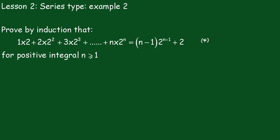We have to prove by induction that 1 times 2 plus 2 times 2 squared plus 3 times 2 cubed, all the way up to n times 2 to the n, is equal to (n minus 1) times 2 to the n plus 1, plus 2, for positive integral n greater than or equal to 1.